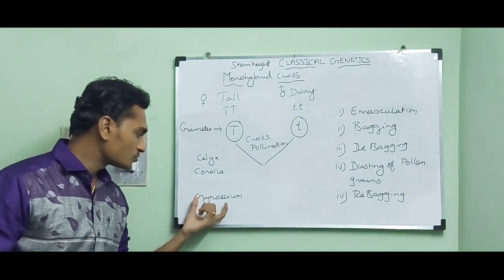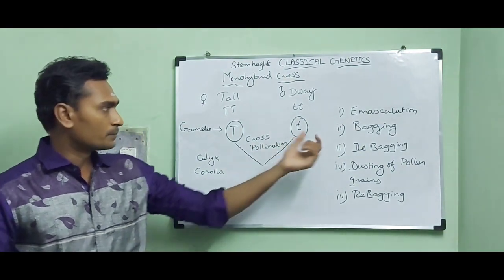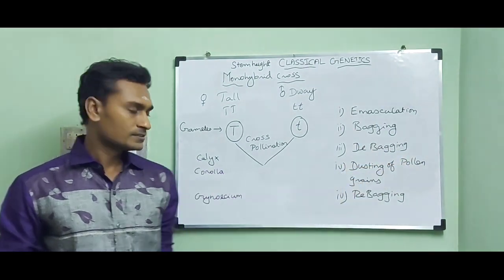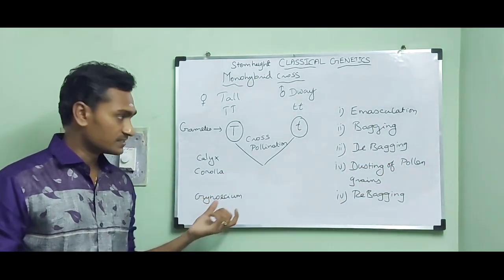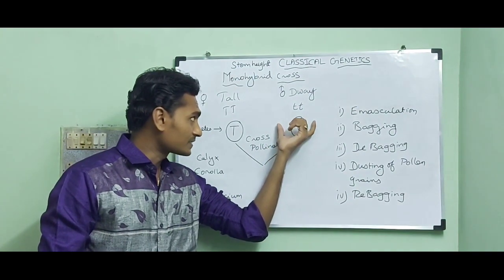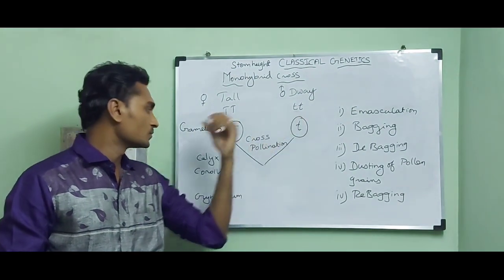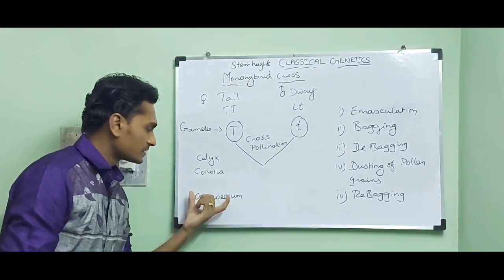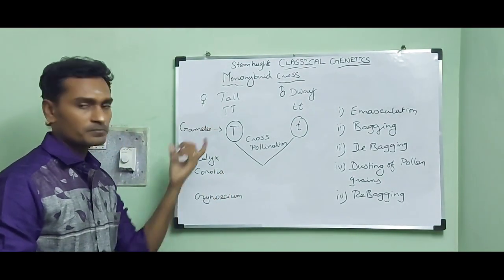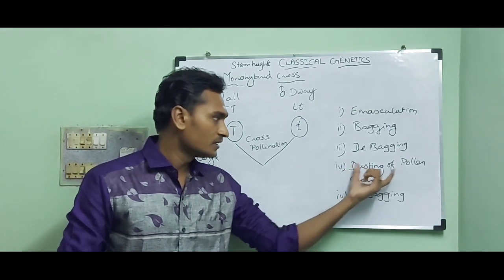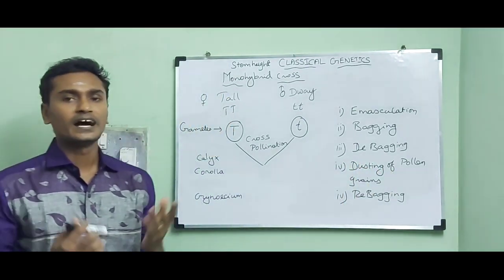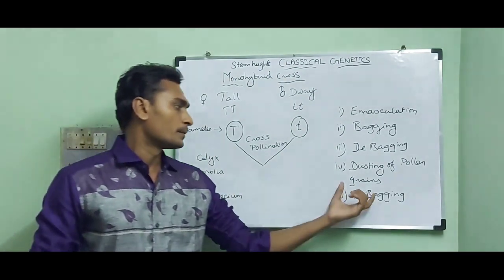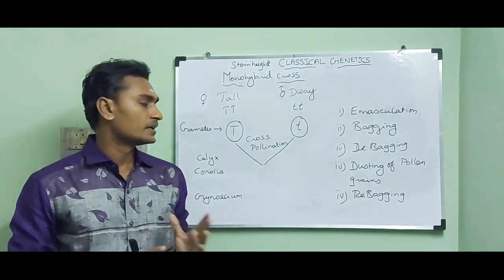After the maturation of the gynoecium, the bags are removed — that process is called debagging. Then the pollen grains are transferred from the male parent to the female parent, and the pollen grains are dusted on the stigma of the female parent — that process is called dusting of pollen grains. Again, the flower is covered with a bag, and that process is called rebagging.